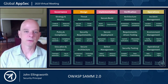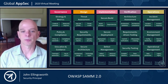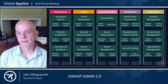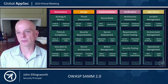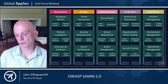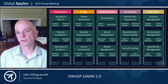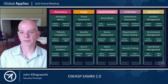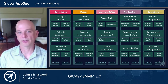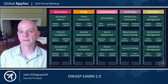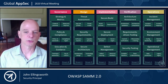For secure build, we have the build process stream; for secure deployment, the deployment process stream; and for defect management, defect tracking. Each of these streams has been added to the 2.0 version, allowing you to focus on specific objectives within those business functions and achieve maturity levels specific to your organization.